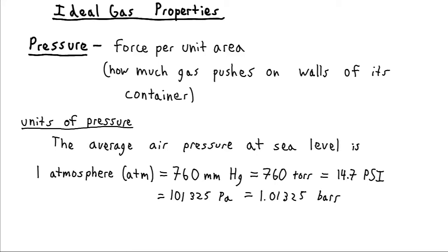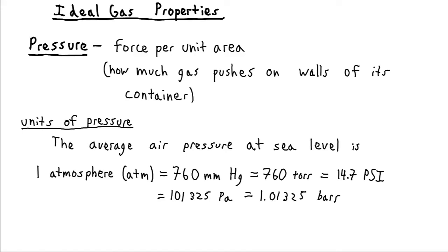This is one case where we often prefer non-SI units. Because our laboratories are usually at one atmosphere pressure, that makes atmospheres really useful and convenient. Our barometers that measure pressure usually do so in millimeters of mercury, because they're mercury barometers. So we'll often find ourselves using these non-SI units instead. Physicists would probably use pascals, but we're going to often deviate from that.